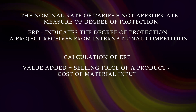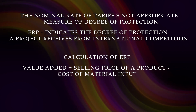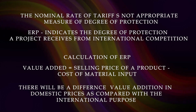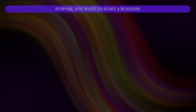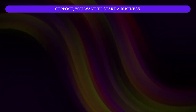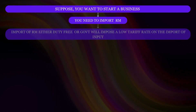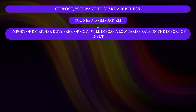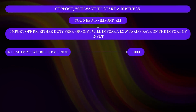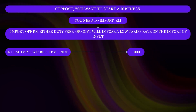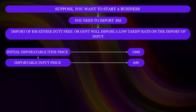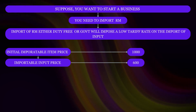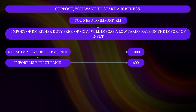Value added is the difference between the selling price of a product and the cost of material input. The purpose of charging tariff is domestic protection. Due to this domestic protection given by the government, there will be a difference in value addition at domestic prices as compared with international prices. Let's take an example. You are residing in India and you want to start a business. Suppose you need to import raw material for producing goods. In a country, import of raw material may be either duty-free or they will impose a very low tariff rate on the import of input. Let's say the initial importable item price is 1000, and the importable input price — that is, the raw material you have to purchase — is 600.